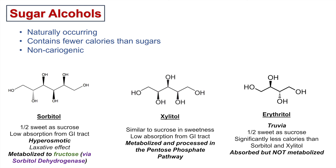The only real difference between each of these sugar alcohols is the number of carbons each one has. Sorbitol has six carbons, xylitol has five carbons, and erythritol has four carbons. This difference in carbon count can alter their absorption and metabolism accordingly.